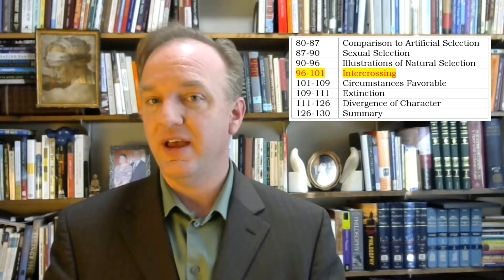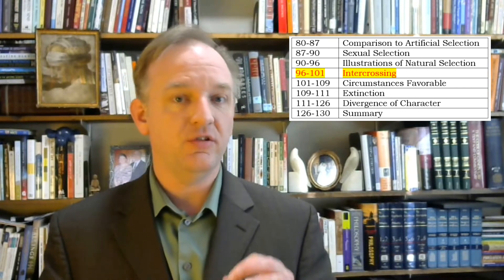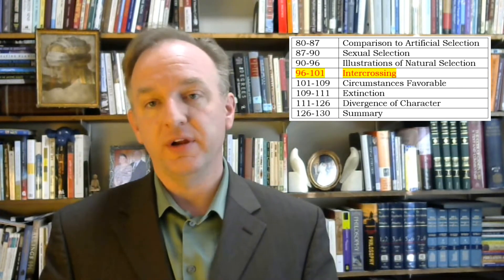The fourth section is six pages long, dealing with intercrossing or outbreeding. It was known in Darwin's time that repeated inbreeding caused weak and sickly offspring, and that occasionally crossing varieties with more distant varieties led to increased health and vigor. Darwin gives several examples illustrating and supporting this conclusion.